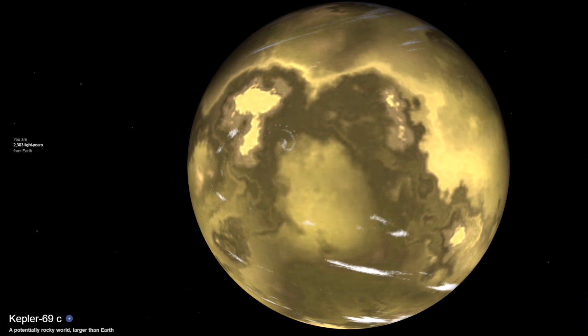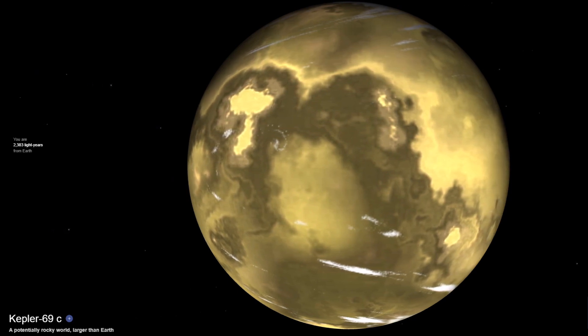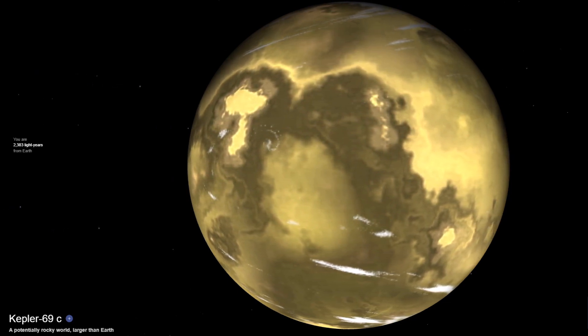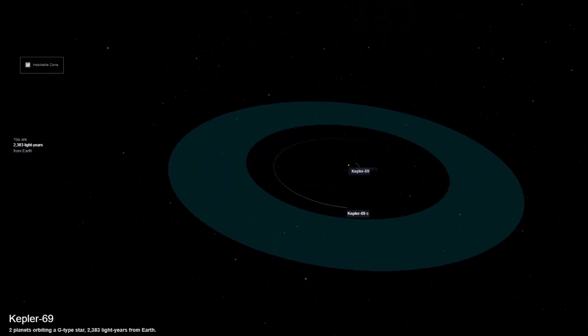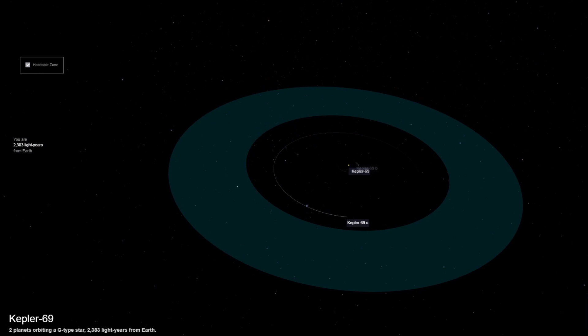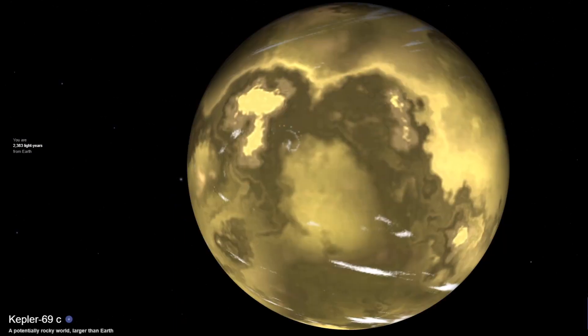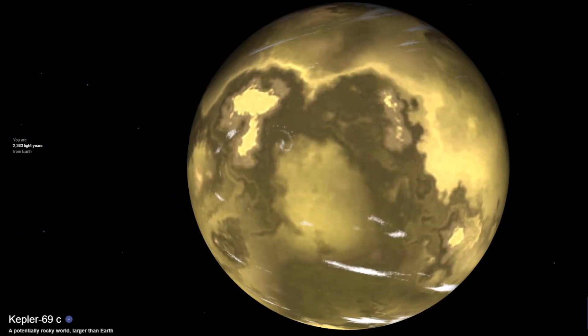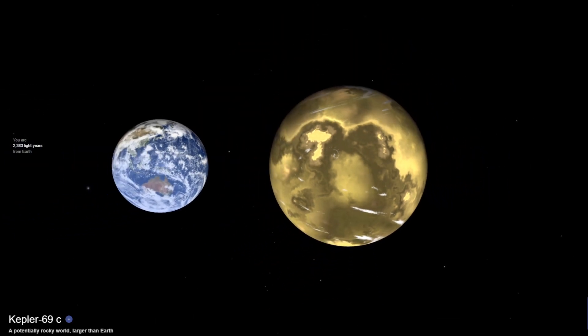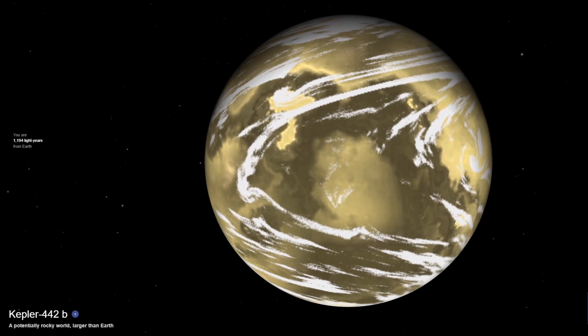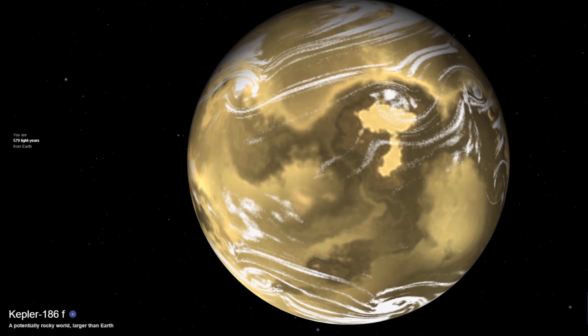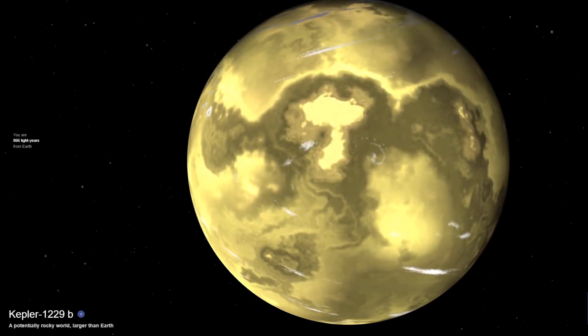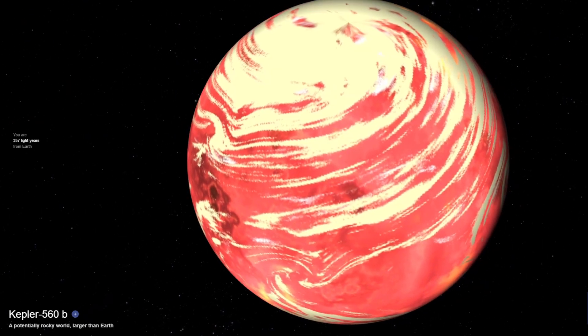Kepler-69c, also known as Kepler Object of Interest 172.02, is likely a rocky super-Earth that orbits within the habitable zone of a slightly smaller star than the Sun, Kepler-69. It's almost twice Earth's radius, has a mass of two Earths, and takes 242 days to orbit its star. There's also Kepler-442b, Kepler-62f, Kepler-186f, Kepler-1229b, and many more.